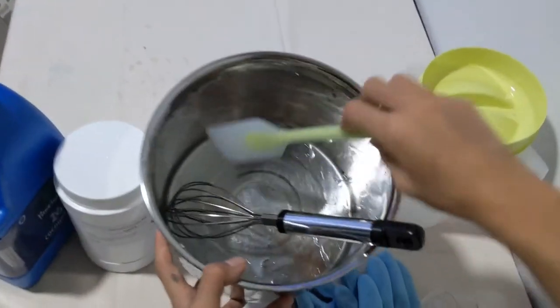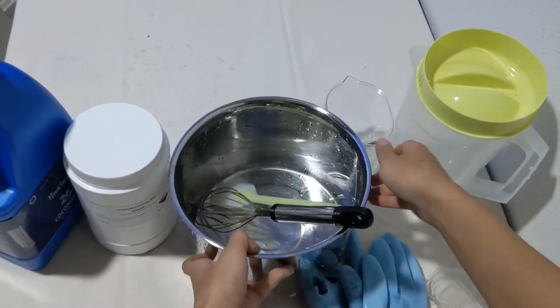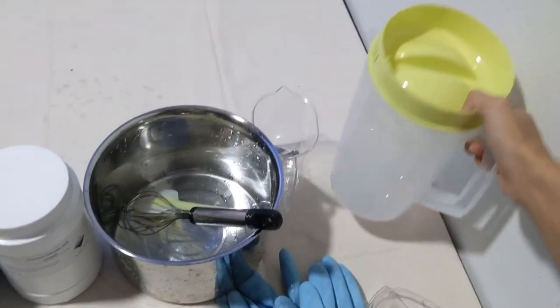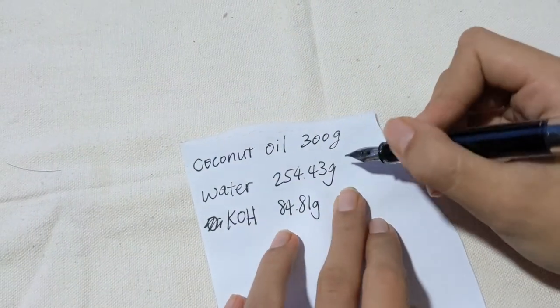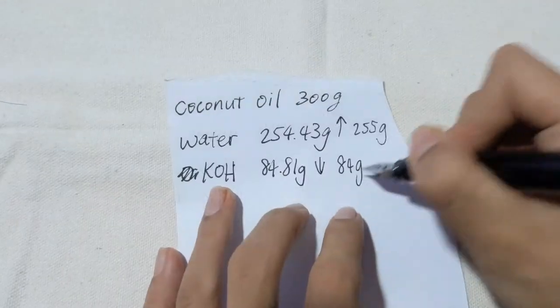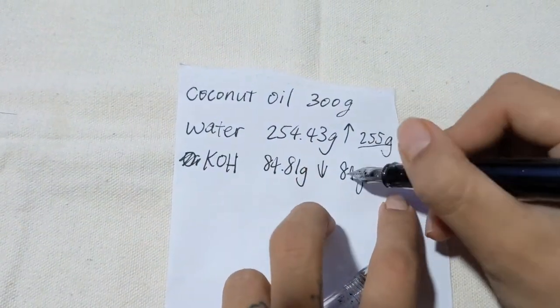You'll also need some lye-safe stirring utensils and containers made of materials such as stainless steel, polypropylene, and silicone. As I'll be using the scale with only one gram precision, I'll be rounding my water amount up and rounding the potassium hydroxide amount down.